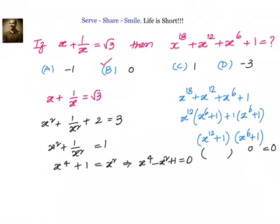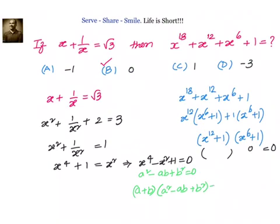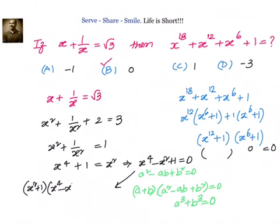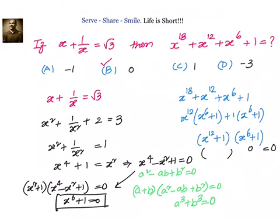What we have is like a square minus ab plus b square equal to 0. If we multiply on both sides by a plus b, we get a square minus ab plus b square multiplied by a plus b equal to 0, or a cube plus b cube equal to 0. Here a is x square and b is 1. So multiplying both sides by x square plus 1, we get x power 6 plus 1 equal to 0. So whether we cube or square both sides, we get x power 6 plus 1 equal to 0, and the answer is option b, 0.